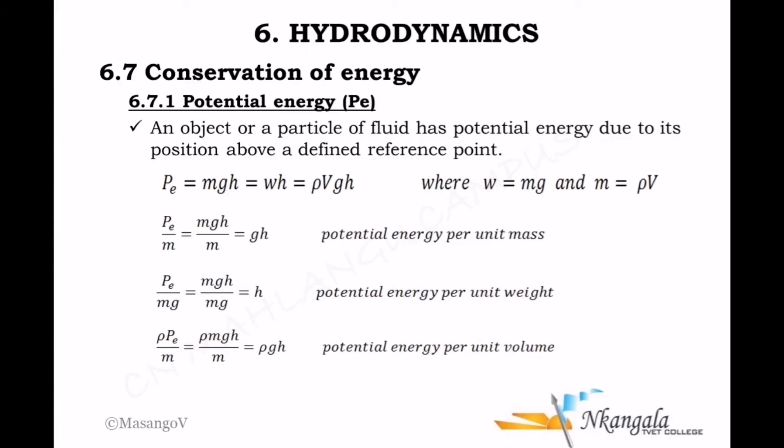The conservation of energy starts with potential energy. The potential energy of a particle is the energy that the particle has because it is at a certain position with respect to a reference point. We calculate potential energy using mgh.